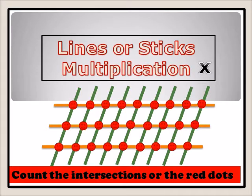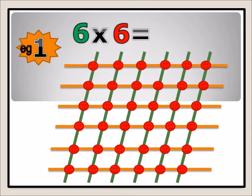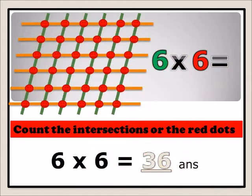You can rule your lines by columns and rows, and then you count all the intersections where they meet — that will be the answer. So here we have six times six: you rule six lines straight and then across six lines, and you count all the dots. One, two, three... all the way up to thirty-six.